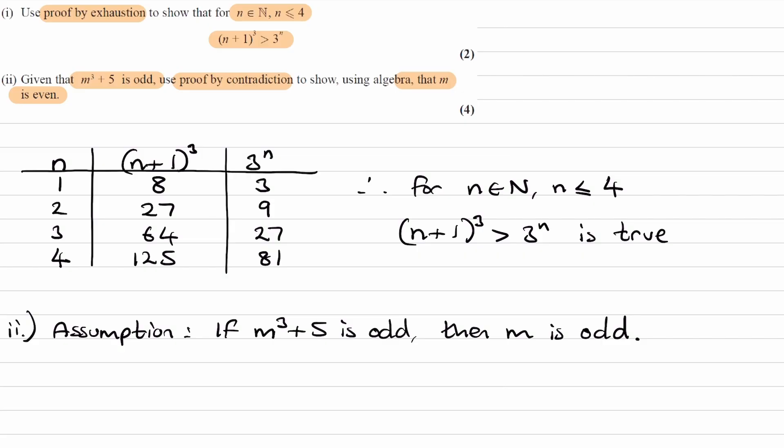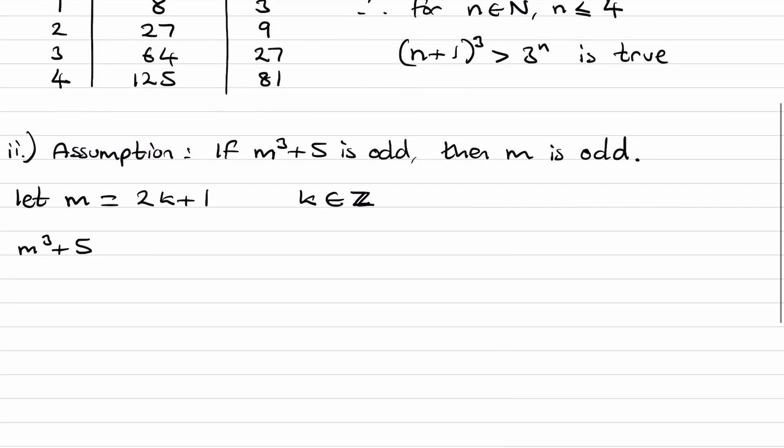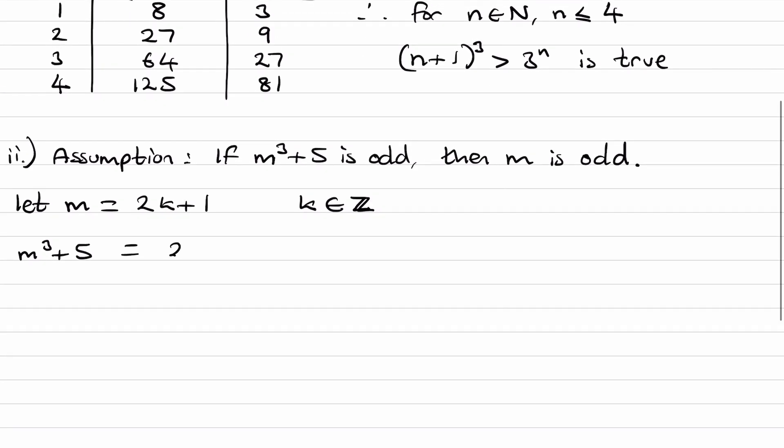Okay, so we can start by, if we know that m is odd, we can start by letting m be equal to 2k plus 1, where k is an integer. So z, this is the symbol here for an integer. We can then put that into our statement. So put that into m cubed plus 5. So this will then be equal to 2k plus 1, all to the power of 3 plus 5.